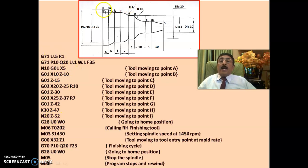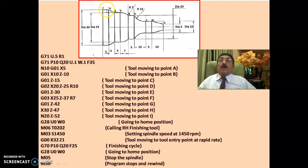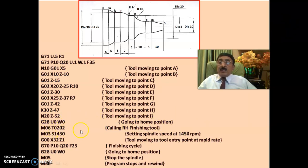N20 G01 Z-52 — this is point I, the end of the profile program. The rough turning portion between N10 and N20 is complete, with 0.1 mm allowance left on both X and Z. The roughing tool is then sent back to the home position with G28 U0 W0, and the finishing tool is called with M06 T0202.